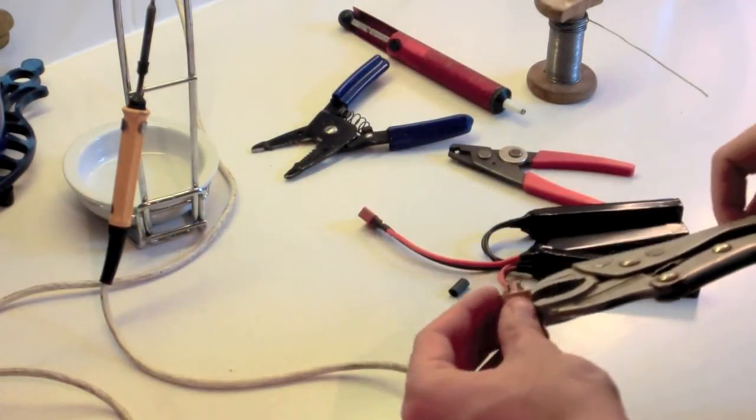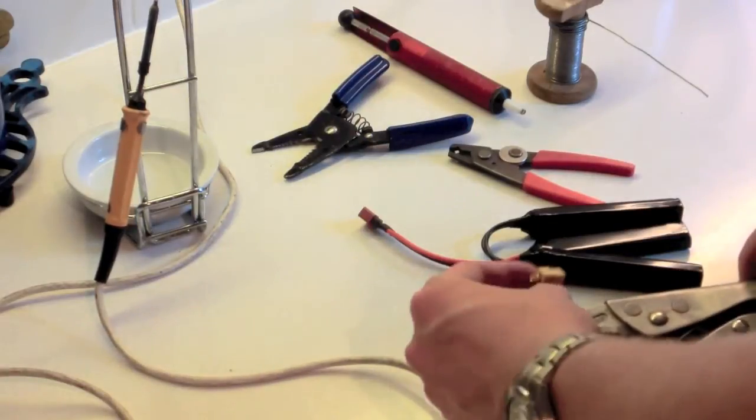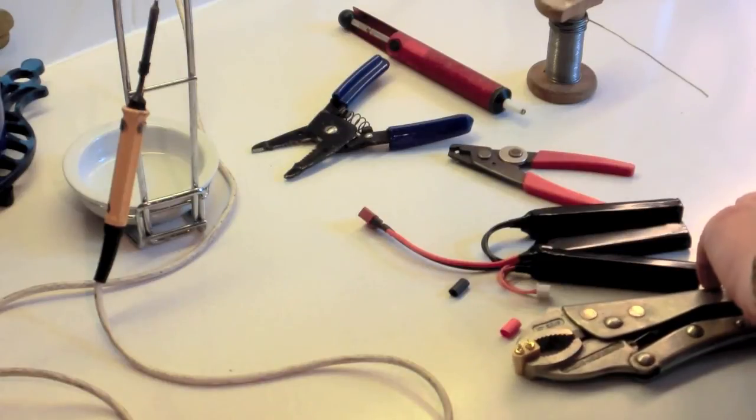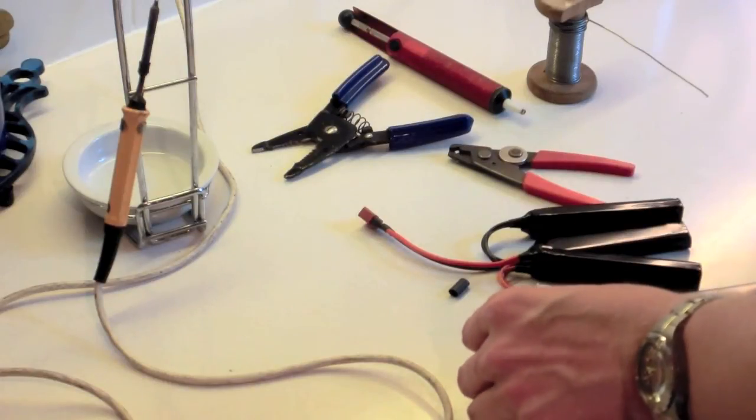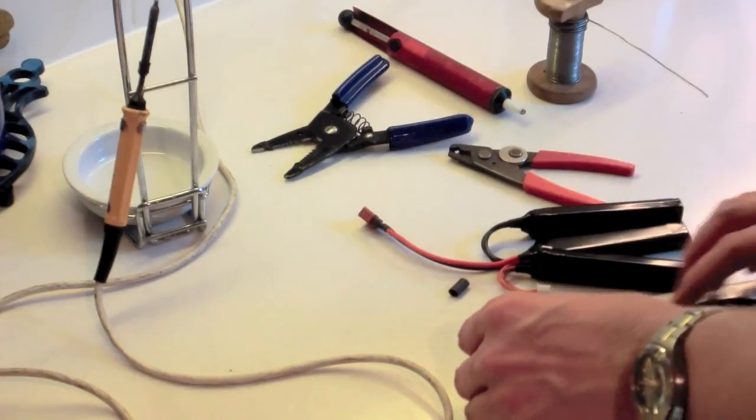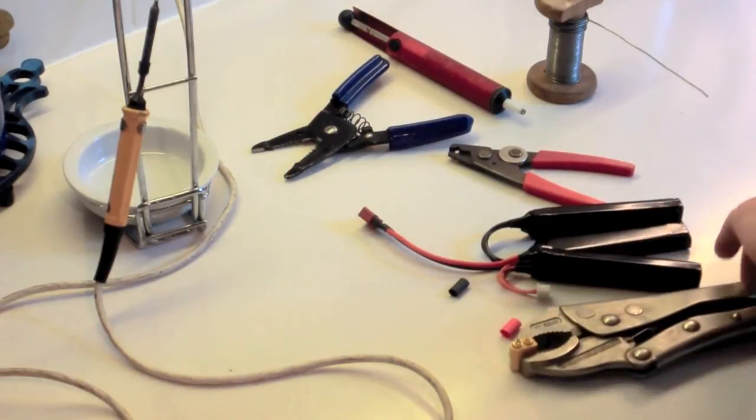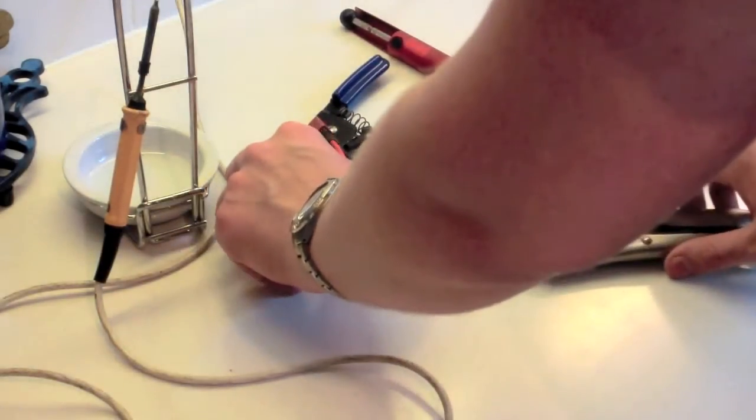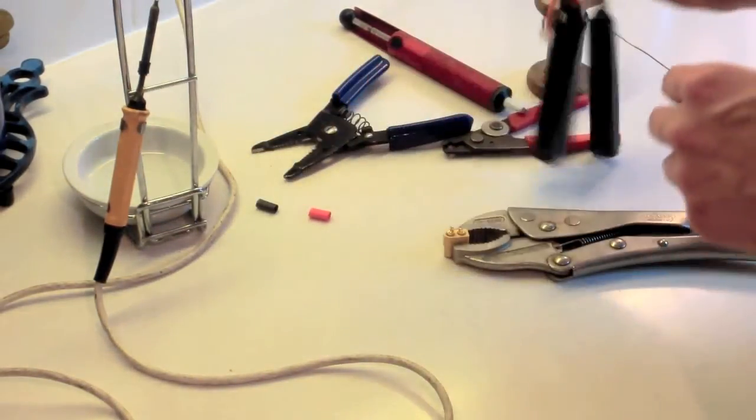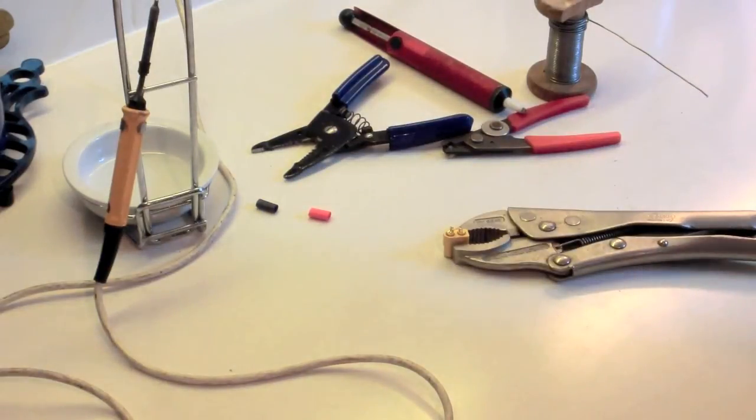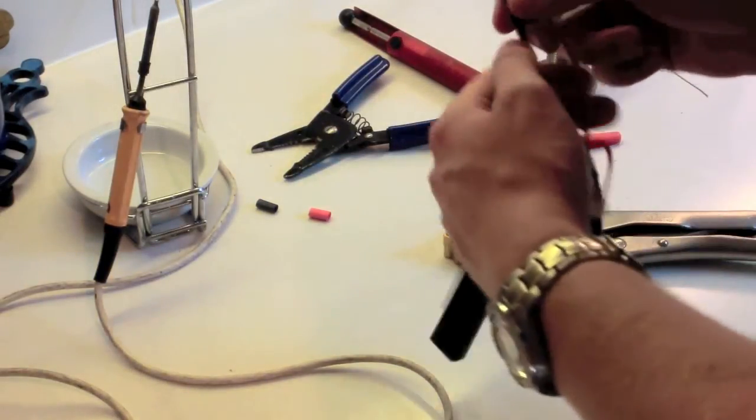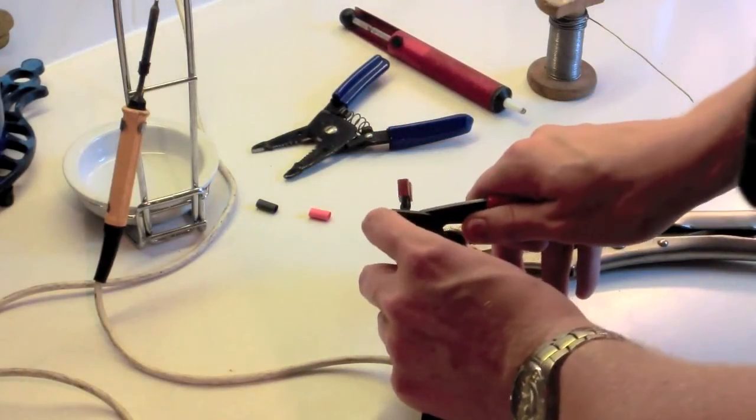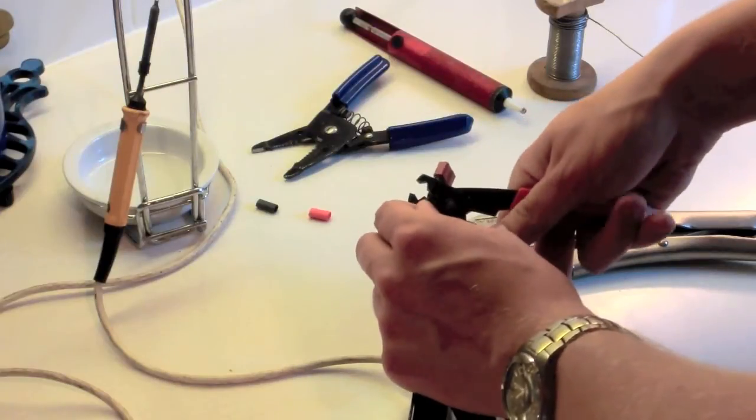So first thing to do, just to clamp this up. So this is my kind of makeshift clamp. Obviously if you have a vice it would be much better than this but this will have to do for now. And let's get cracking. So I think that I will do the negative wire first. So get your wire cutters and just chop that off.